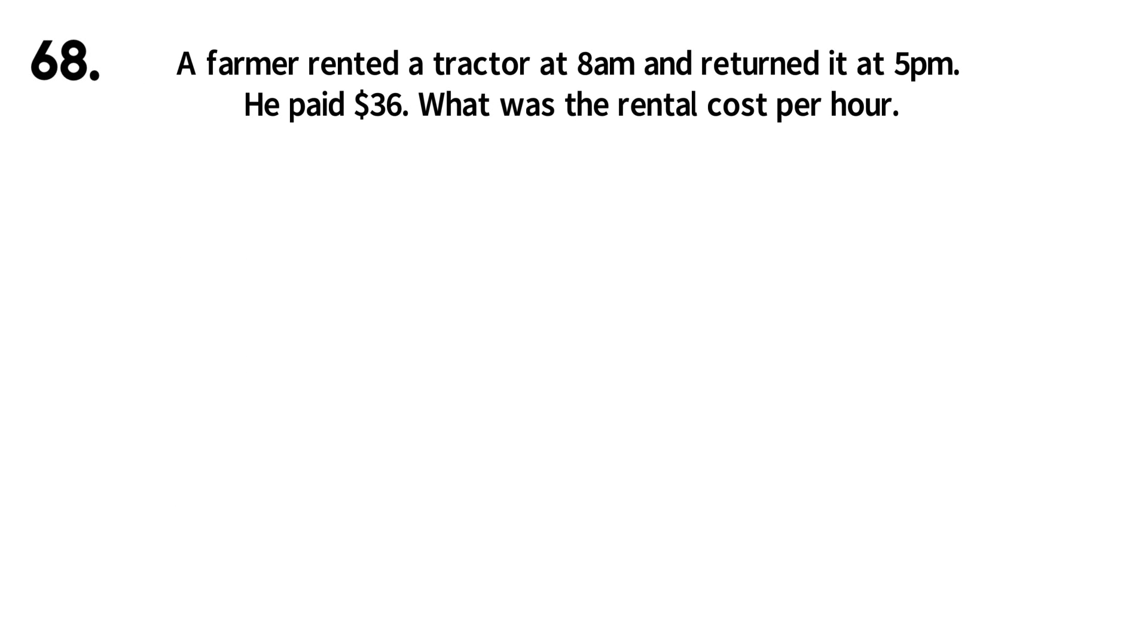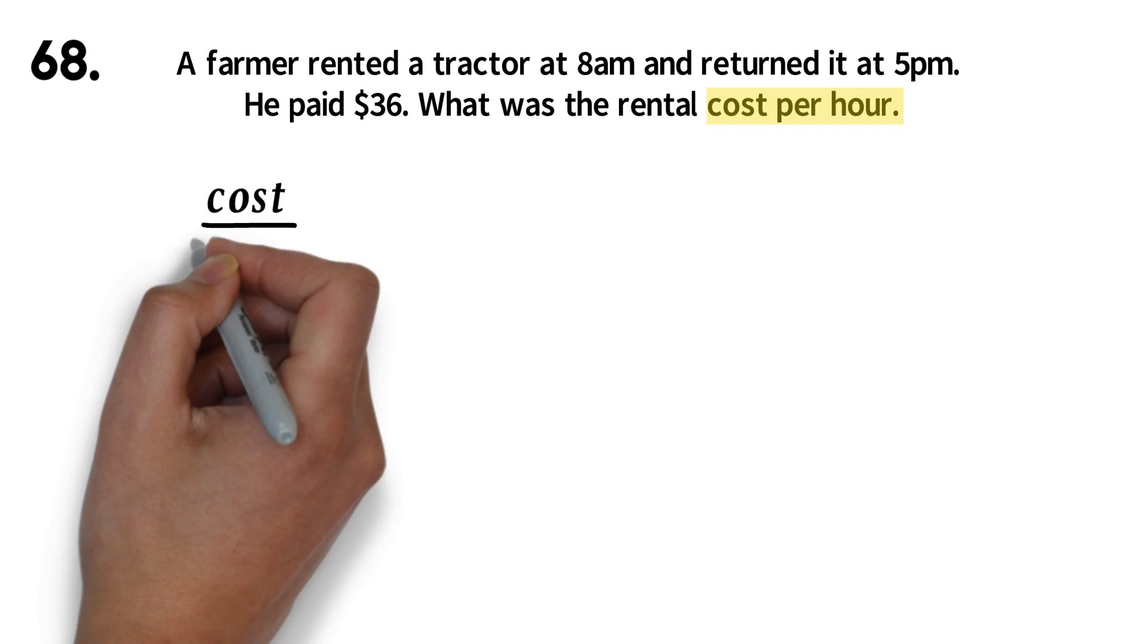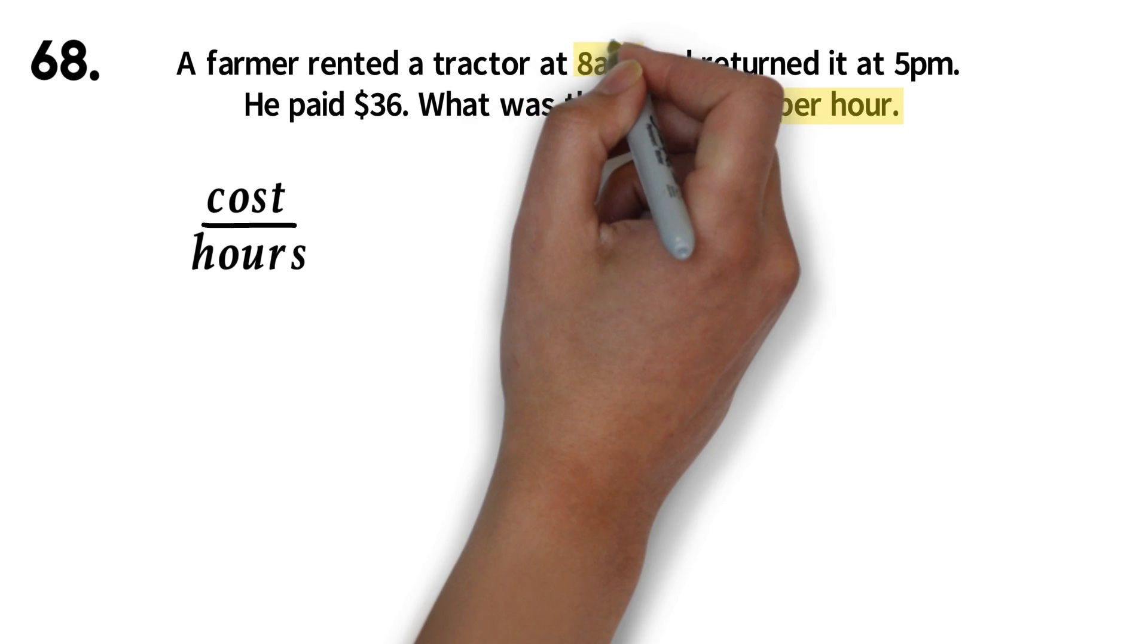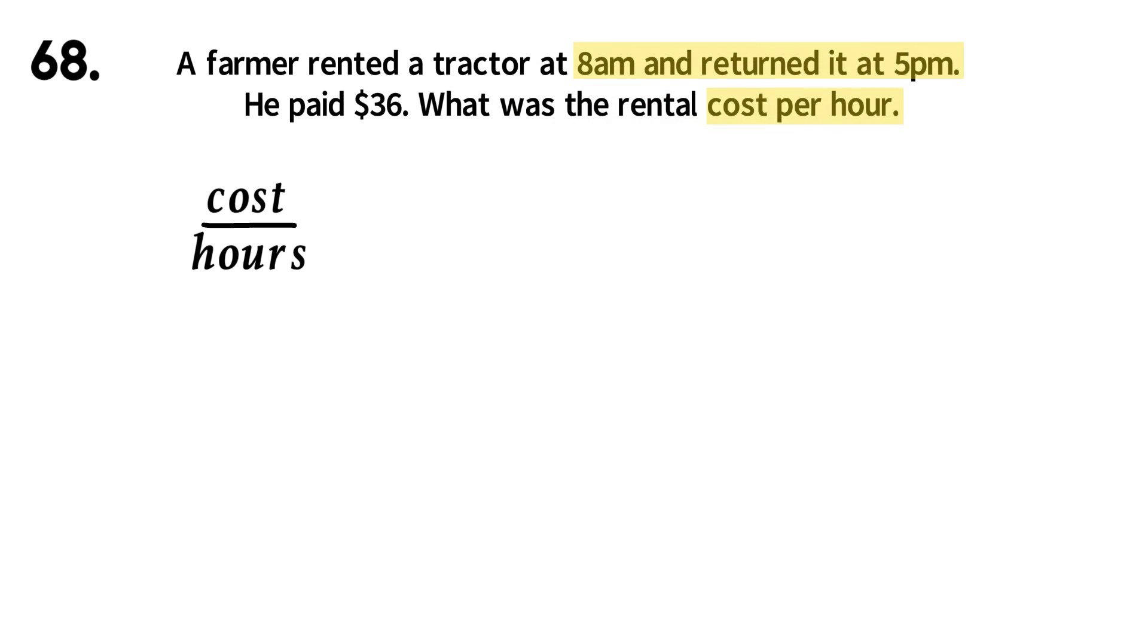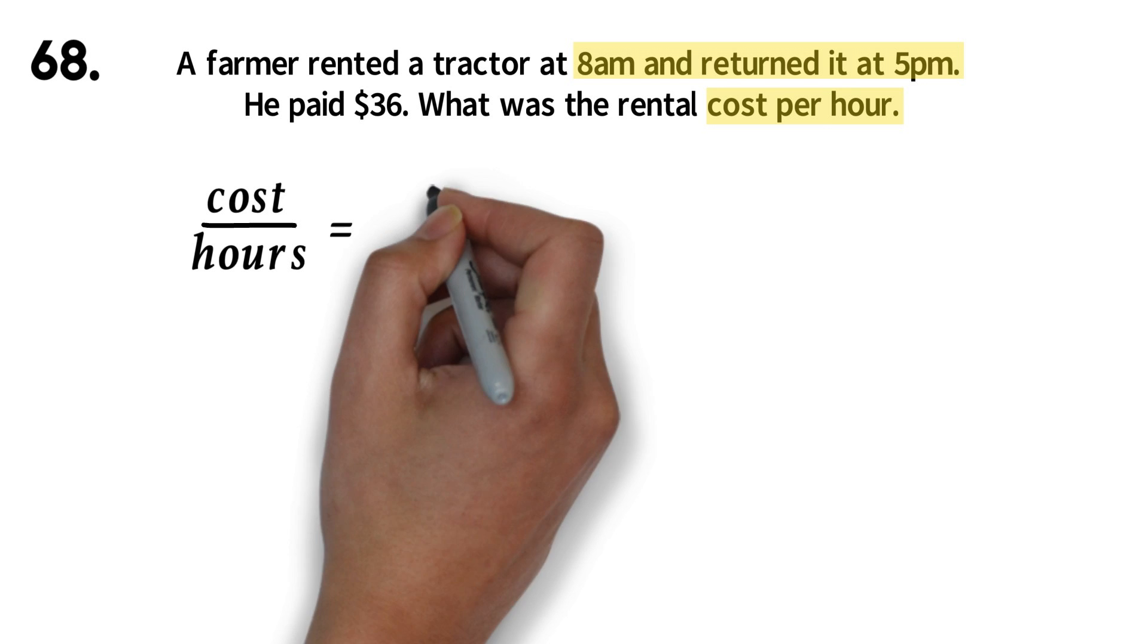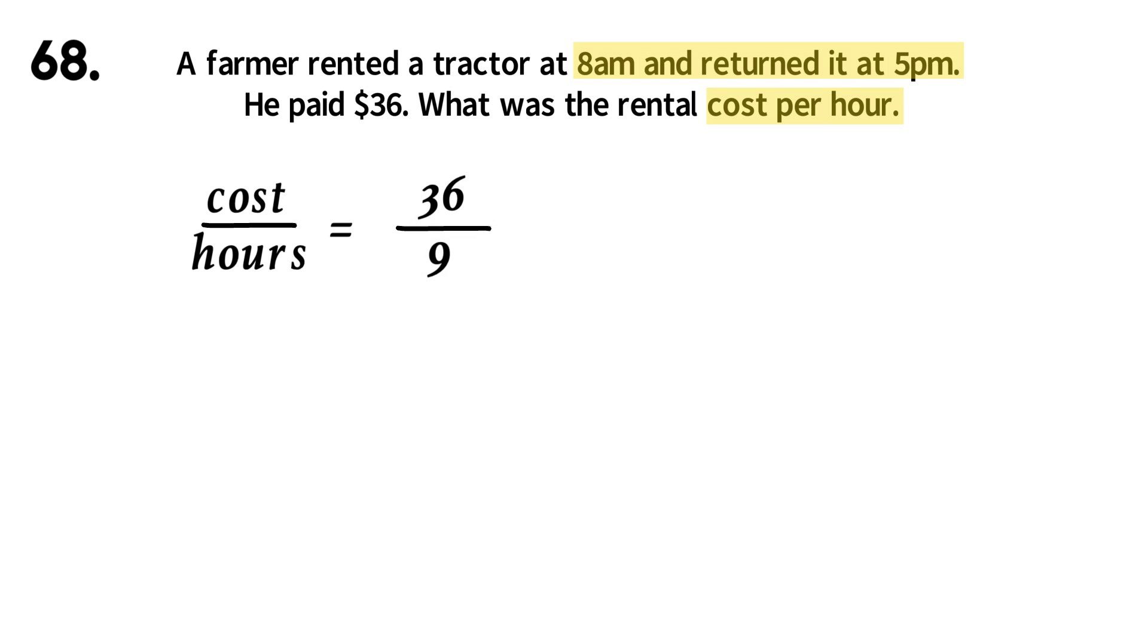Question 68. A farmer rented a tractor at 8 a.m. and returned it at 5 p.m. He paid $36. What was the rental cost per hour? This is a rate question. It's simply a division question. You will know what you are dividing by looking at this statement, cost per hour. So we are dividing the cost by the hours. From 8 a.m. to 5 p.m. is 9 hours. So we have 36 divided by 9. This will give us a rental cost of $4 per hour.